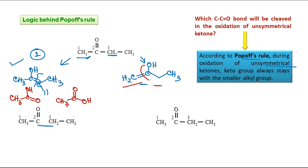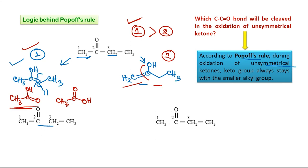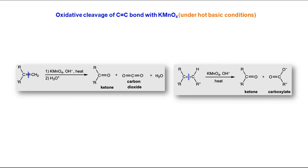But you don't have to consider the second possibility, because according to Popoff's rule, the first is correct. The logic is that it goes through enol formation, and enol one is more stable than enol two. That is why this is the preferred path, and 2-3 C-C bond cleavage will take place. Now, to understand how to write the products after C=C double bond cleavage, we can consider oxidative cleavage of C=C double bonds with KMnO4.